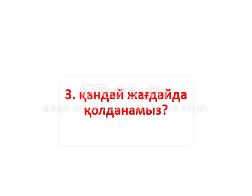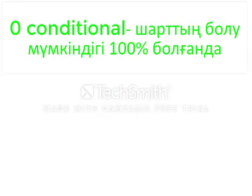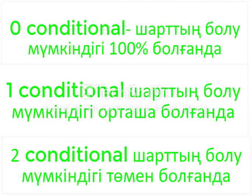In what situations to use? We use zero conditional for general truth, first conditional for a possible event, and the second conditional for unreal events.